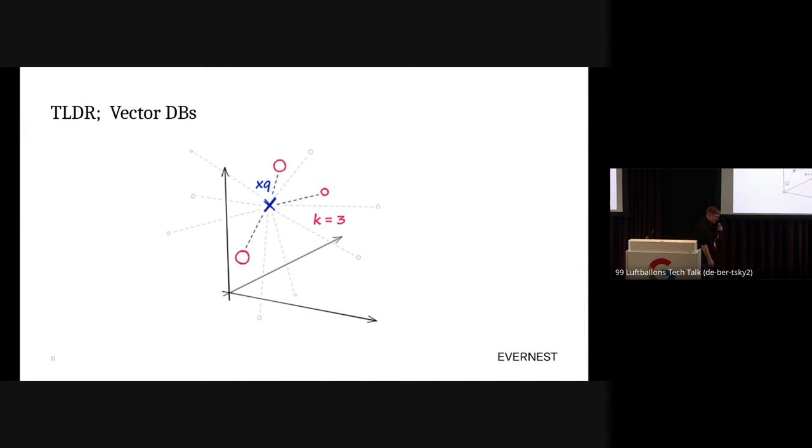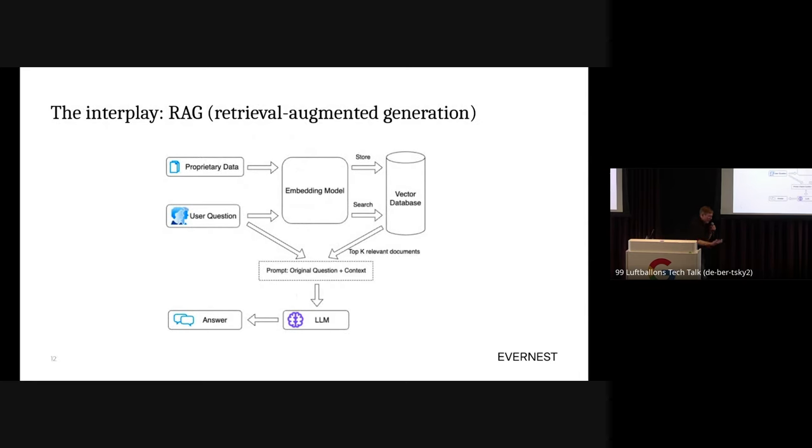Vector databases are databases where you can store those embeddings as vectors in high-dimensional space. The circles are individual vectors in your database. The interesting thing is the lookup pattern, which is typically find k nearest neighbors to a query vector. The blue vector is an incoming query. I've computed an embedding of a question and now I'm trying to find nearby vectors in my database, in this case the three most similar vectors.